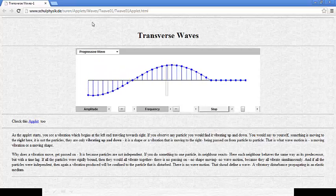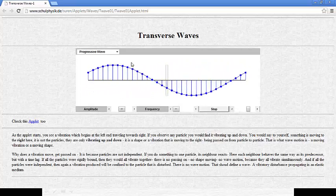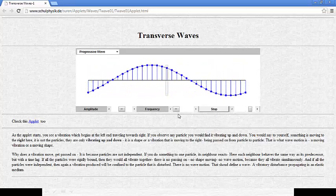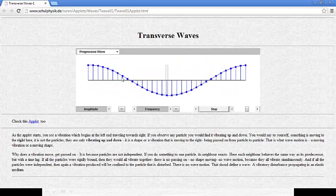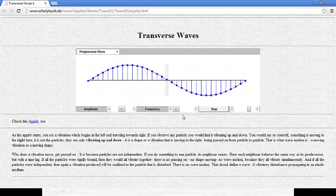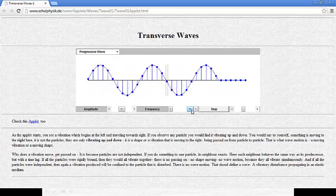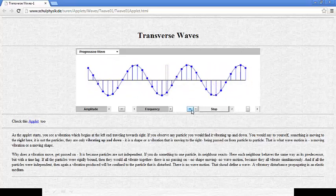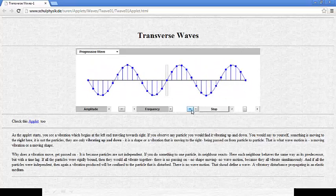We're going to watch a couple animations to show what we mean by frequency. This is an example of a transverse wave. Notice how I have the frequency set very low. It's how often the wave is repeating itself. So if you watch just one of those particles, how often it makes one complete cycle up and down. If I increase the frequency, you can see that those individual particles are moving up and down at a much quicker rate.